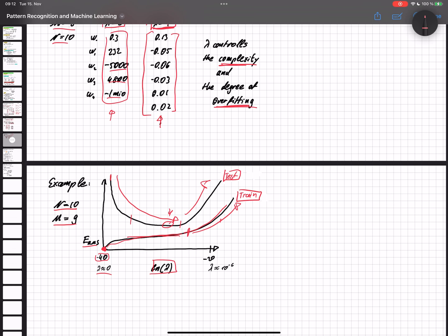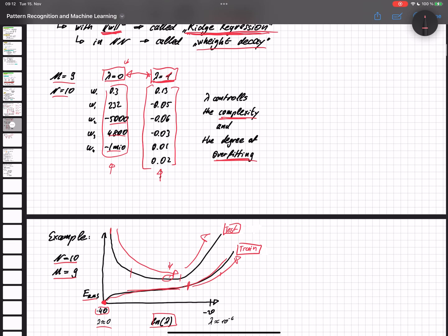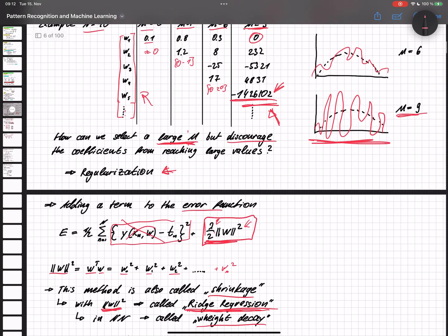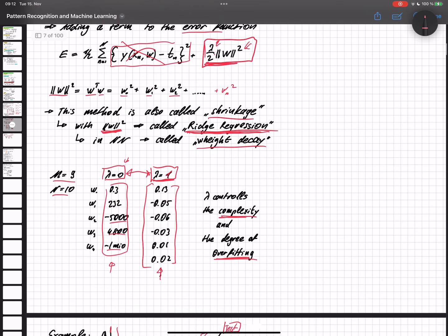So we basically just shifted the problem from one thing to another. We started with selecting the right parameter for the degree m, but then we said we don't want to set the correct parameters, we want it to be set automatically. And now we have a solution for that, but in this case we have to select the parameter lambda. And how we can work with that will be discussed in another video where we talk about the Bayesian probability theory.